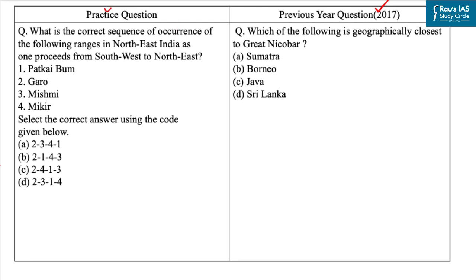Now the practice question: what is the correct sequence of occurrence of the following ranges in northeast India as one proceeds from southwest to northeast? The options are: first, Patkaibam; second, Garo; third, Mishmi; and fourth, Mikher. Let's answer this question with the help of a map.